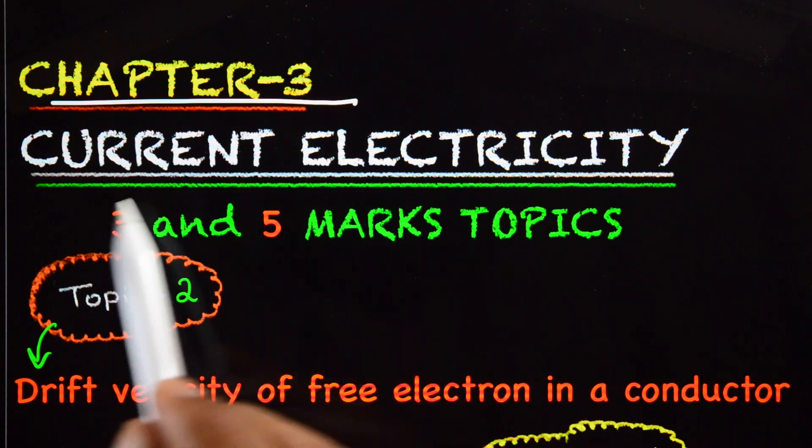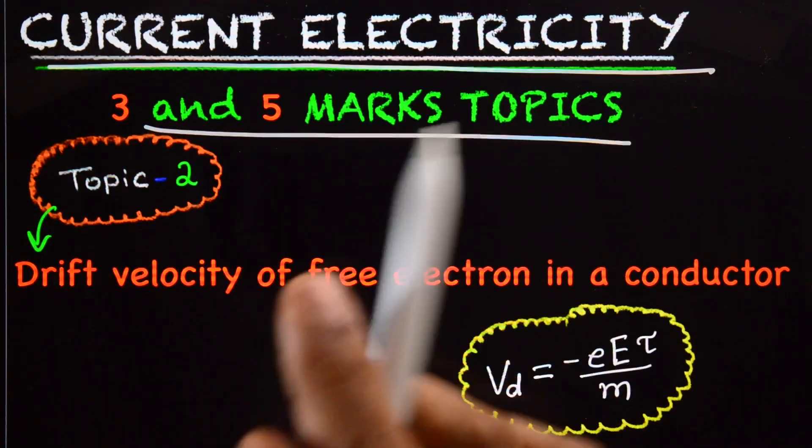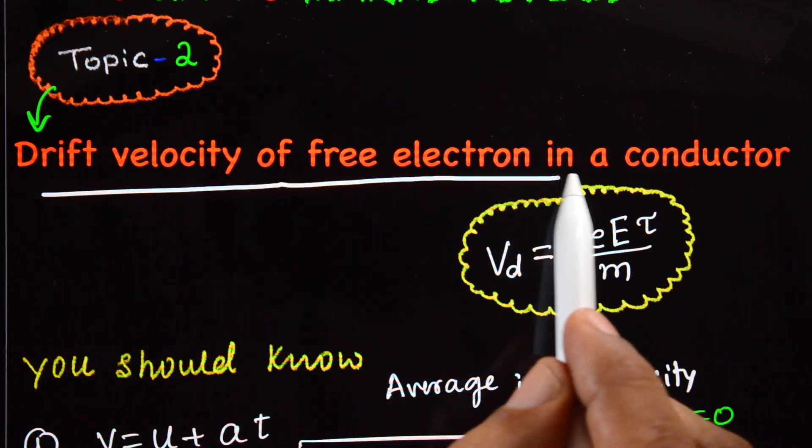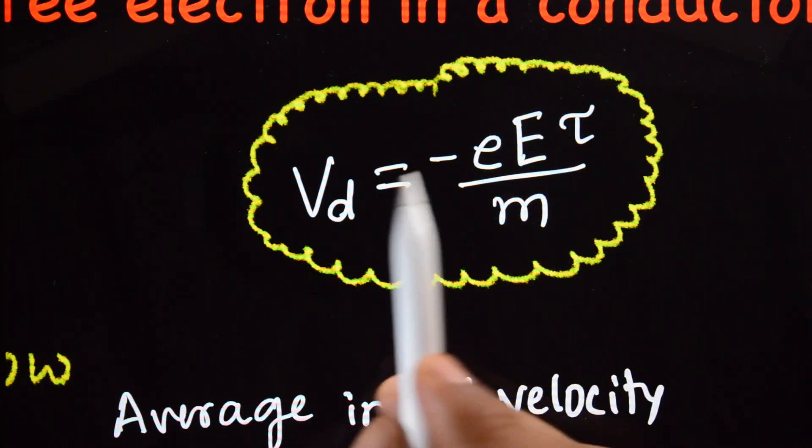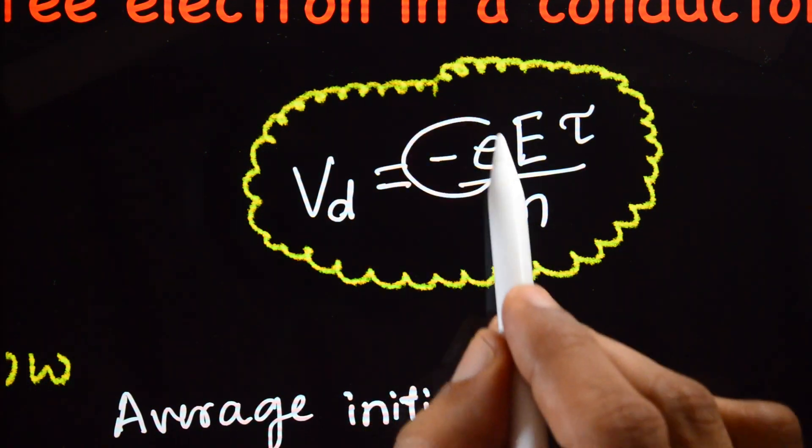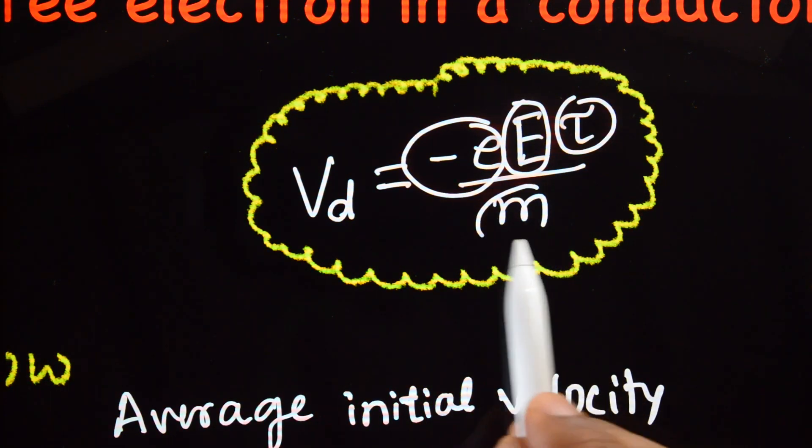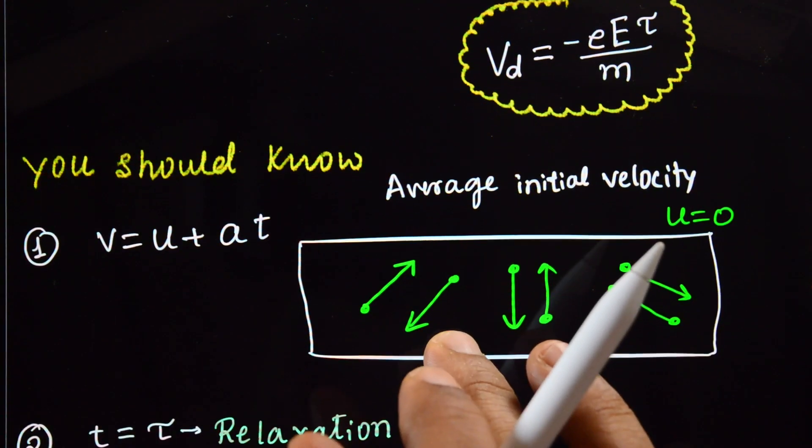Chapter 3, Current Electricity, 3 and 5 marks topic. We shall do the second topic now: drift velocity of free electrons in a conductor. We are going to prove that drift velocity V_d equals minus e times capital E times tau divided by m. To derive this, you should know a few things.